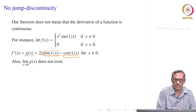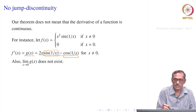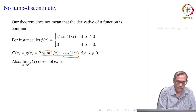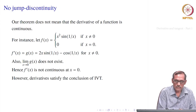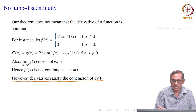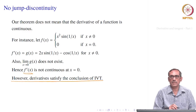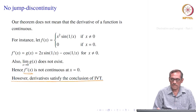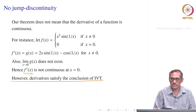So f'(x) is not continuous at x = 0, but f itself is continuous — that is what our theorem guarantees, since f is differentiable at 0. There is something more that holds for derivatives: recall that if a function is continuous on an interval, it satisfies the conclusion of the Intermediate Value Theorem — for a closed interval [a, b], any value between f(a) and f(b) is achieved.